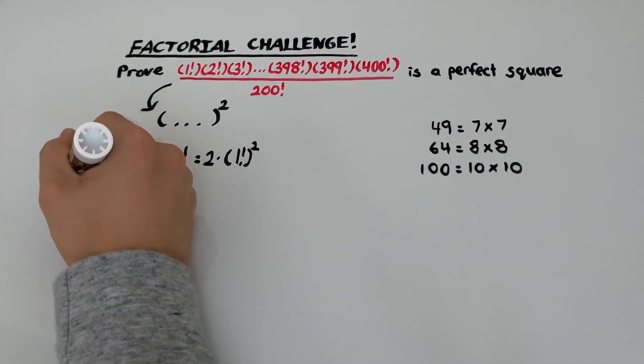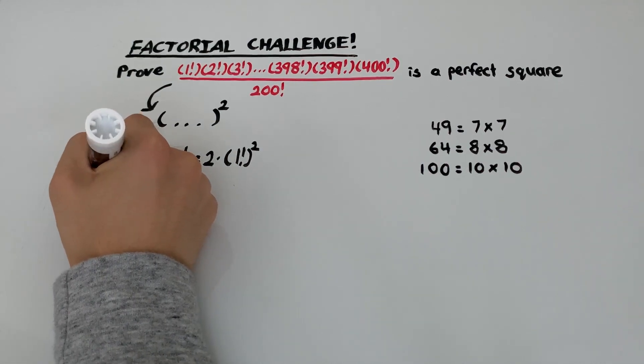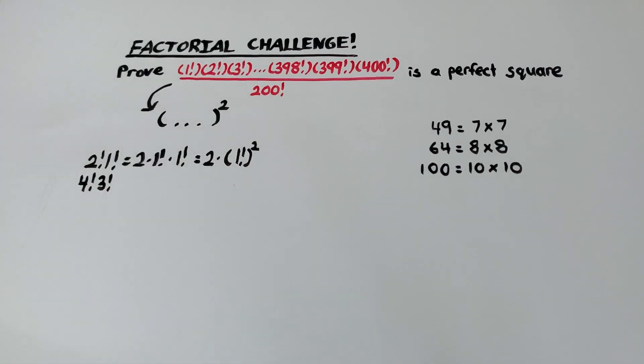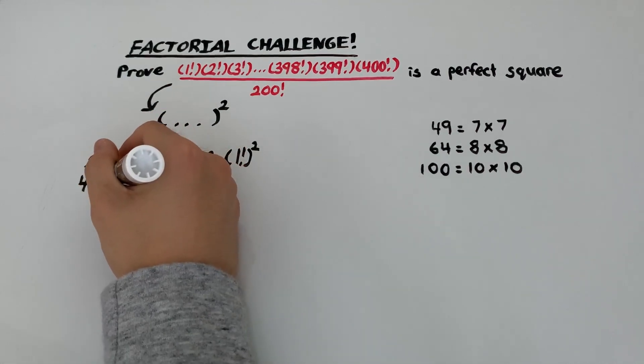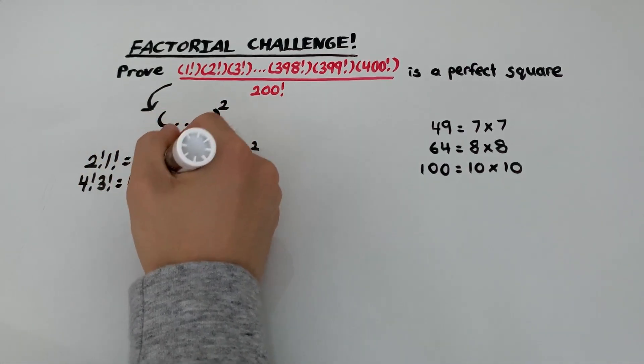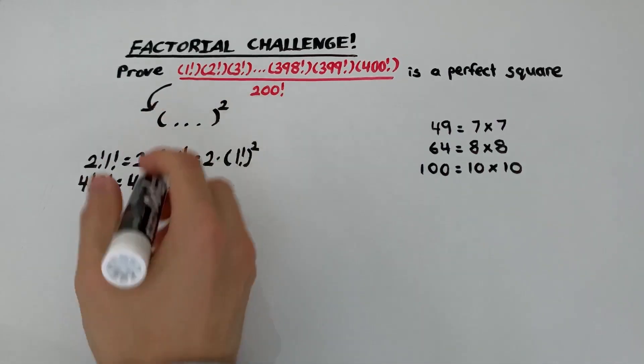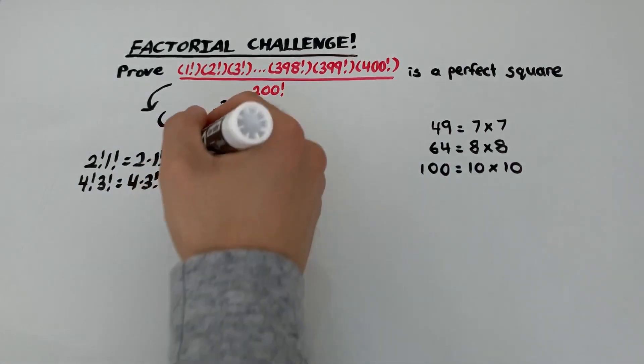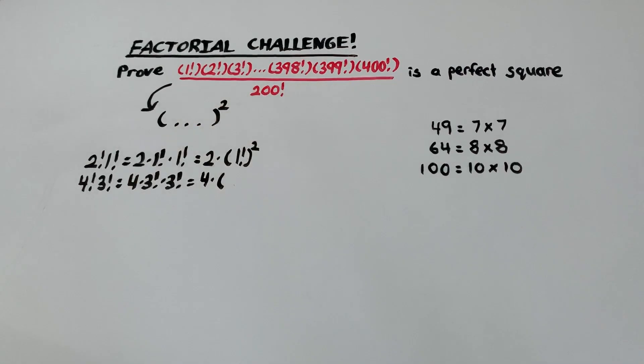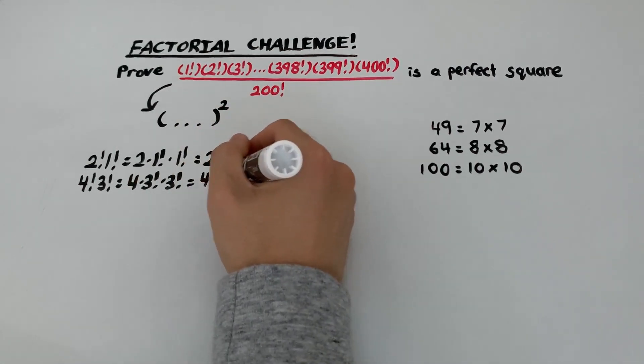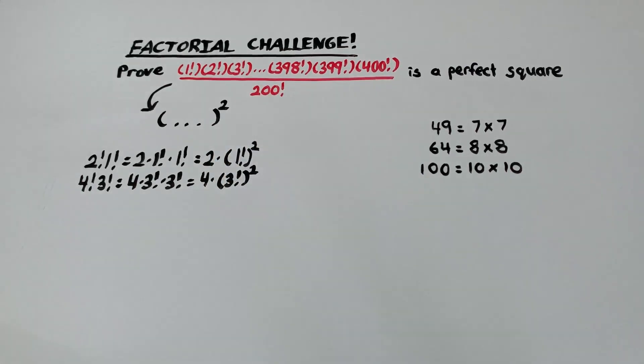Let's take a look at the next two. How about 4 factorial and 3 factorial? 4 factorial can be broken up as 4 times 3 factorial. And then we have another 3 factorial at the end. And this is the same as 4 times 3 factorial times 3 factorial is the same as 3 factorial squared. So we seem to be heading on the right path because we're getting a couple of terms which are squared, which is good. We have a 2 and a 4, but maybe we can worry about that a little later. Right now it's just a good sign that we're getting some perfect squares.